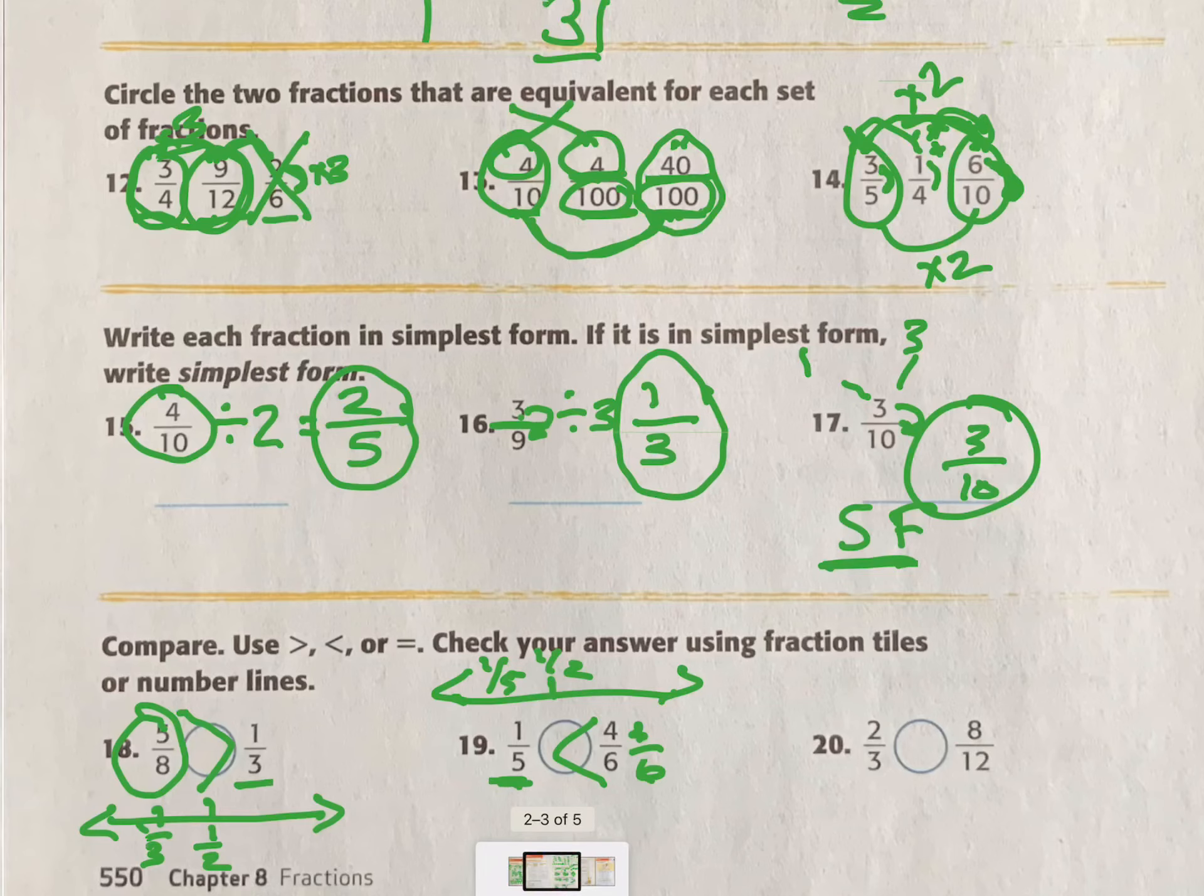I also know this one's closer to 0 because it's only 1 out of 5, whereas this one's closer to a whole because 4 out of 6 is pretty close to 6 out of 6. 2/3 and 8/12. This one's harder. That's kind of close to a whole. And these are so big that I can't tell. So I need to find the least common multiple between 3 and 12. Well, if I skip count by 3, I go 3, 6, 9, 12. And so I only have to get it to 12. I don't have to do anything to this one. 2 times 4 is 8. 3 times 4 is 12. So they are equal.